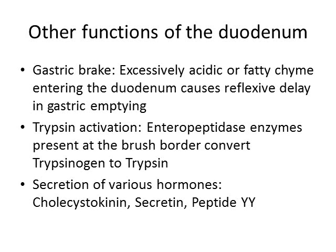This occurs partly through neuronal feedback and partly through hormonal feedback such as peptide YY. The mechanisms, to be honest, are not clearly understood. But when there's a lot of fat in the duodenum and the contents are hyper-osmolar, or if there's too much acid in the duodenum, the stomach will slow down its emptying into the duodenum.